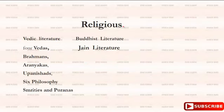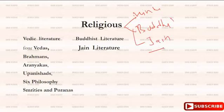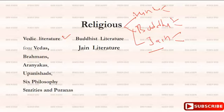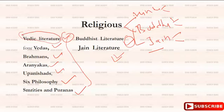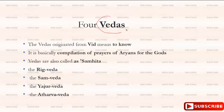Religious sources are divided into three parts: Hindu religion, Buddhist religion, and Jain religion. In Hindu literature, the vedic literature includes Vedas, Brahmanas, Aranyakas, Upanishads, six philosophies, Smritis, and Puranas. There are also books related to Buddhist literature and Jain literature. First, I am going to discuss the Vedas under Hindu or Vedic literature.